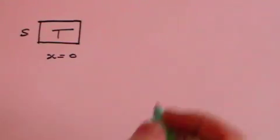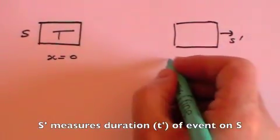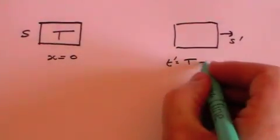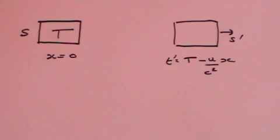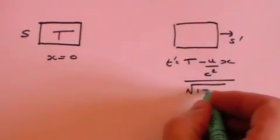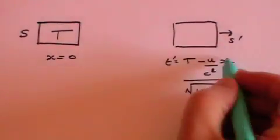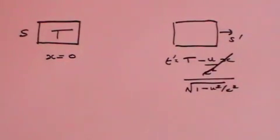What does S prime say? S prime says that t prime equals t, which now we know is capital T seconds, minus u over c squared times x, divided by the square root of 1 minus u squared over c squared. But x is zero, and so t prime equals t divided by the square root of 1 minus u squared over c squared.